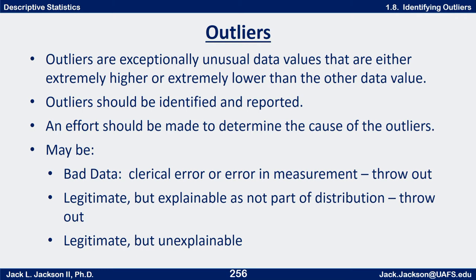So what should we do with outliers? First of all we should identify them if they're in the data and report them. We should try to decide what the cause of the outlier is. One possibility is bad data — somebody actually wrote the wrong number down, a clerical error, maybe they transposed the digits, copied it down wrong, or got the decimal place in the wrong place. If you can identify that that's the case, just throw that out as a bad measurement and analyze the data without it, since it's not a legitimate data value.